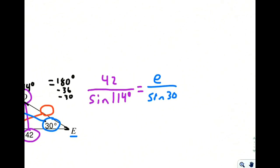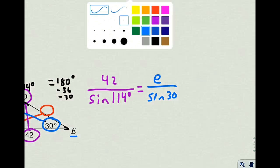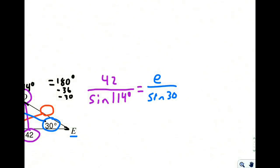And then I'm going to multiply both sides by sine of 30. So multiply by sine of 30 over here. Multiply by sine of 30 over here. These will divide against each other, cancel each other out.